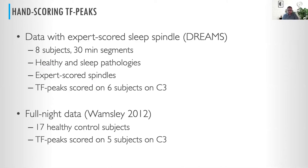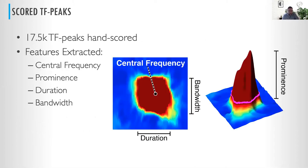We looked at a couple of datasets. The first is the DREAMS database — eight subjects with 30-minute segments, both healthy and those with sleep pathologies, with expert-scored spindles in the time domain. We scored time-frequency peaks on six subjects at C3. Thanks to the generosity of Dara Manoach, we also looked at full-night data from control subjects from the Wamsley 2012 paper, scoring five subjects at C3. This ended up being a Herculean task — I'd like to recognize Tanya Dimitrov, our research assistant, who hand-scored 17,500 of these TF peaks.